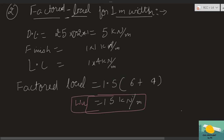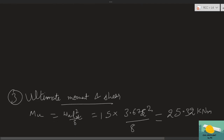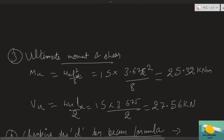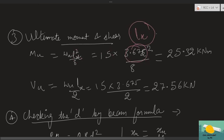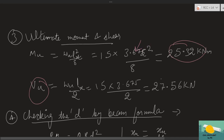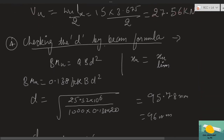Calculating ultimate moment and shear. Ultimate bending moment Mu = wL²/8 = 15 × 3.675² / 8 = 25.32 kN·m. For slab design, always use the shorter span effective span. Design shear force Vu = w × Lx / 2. Both values are now determined.